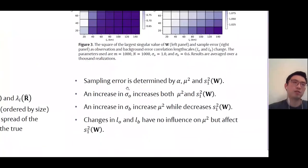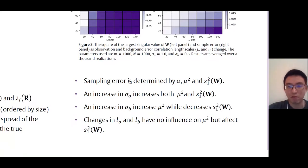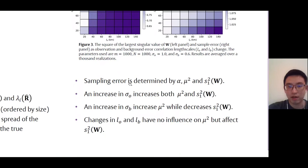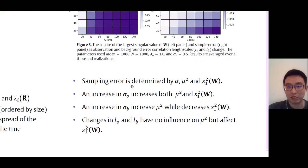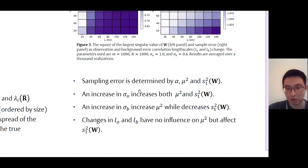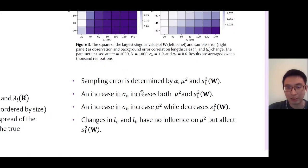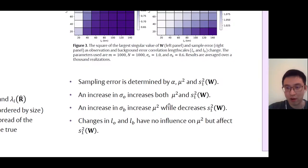There are a few key points from our numerical results. First, sampling error is determined by factors alpha, mu squared, and S squared. Second, an increase in sigma O increases both mu squared and S squared, while an increase in sigma B increases mu squared but decreases S squared. Changes in L O and L B have no influence on mu squared but do affect S squared.